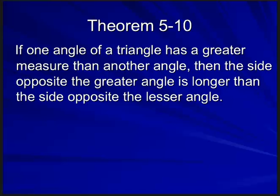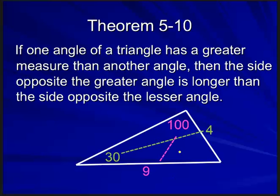The opposite statement is also true: if one angle of a triangle has a greater measure than another angle, then the side opposite that greater angle is longer. The longer side has a bigger angle; the bigger angle has a longer side. For example, if 100 is bigger than 30, then the side opposite the 100 is going to be bigger than the side opposite the 30.